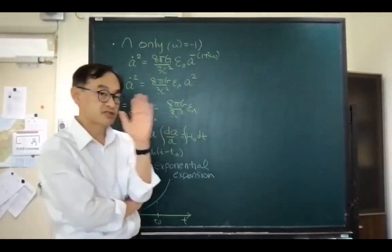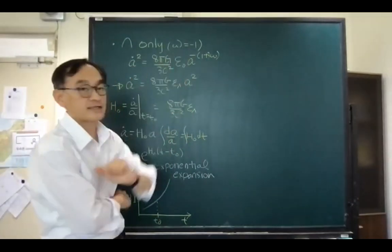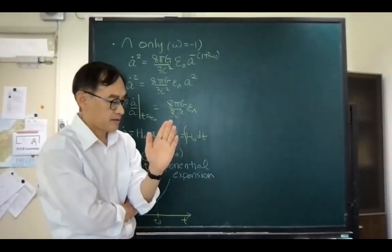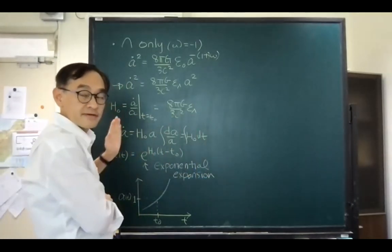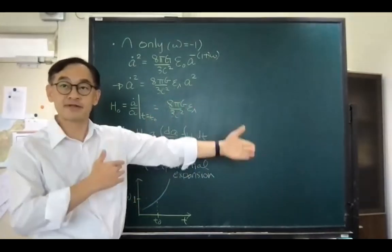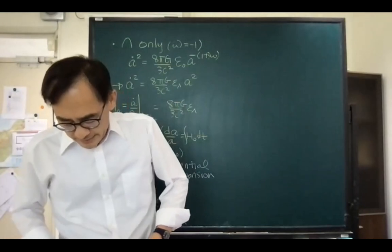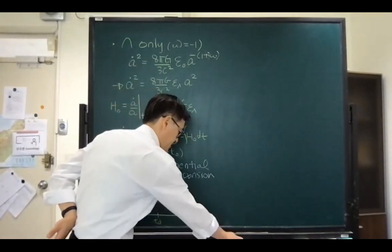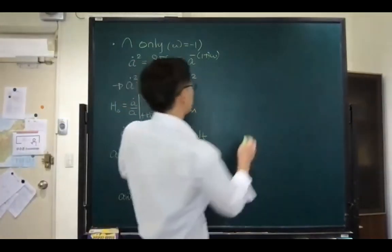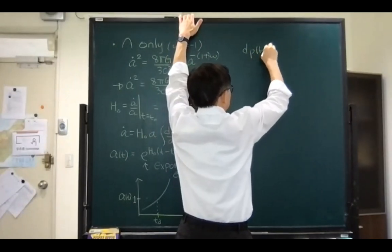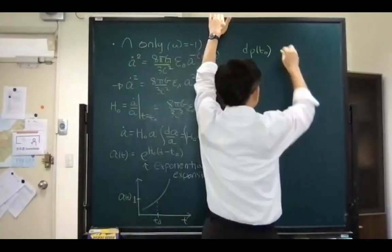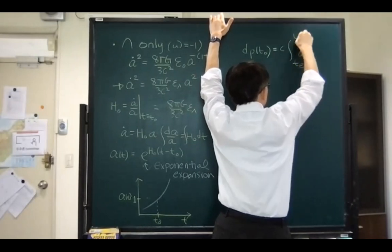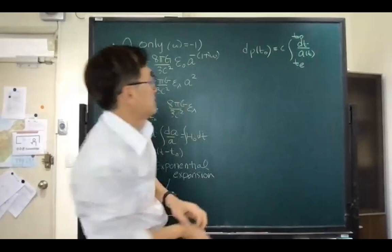Let me discuss the general case. When w is less than −1/3, the age of the universe approaches infinity and the horizon distance is also infinite. For the lambda-only universe, let's compute the proper distance.